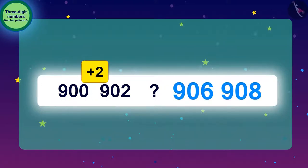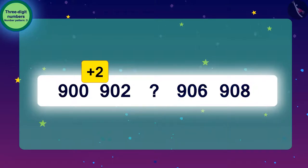And if we look carefully at the last two numbers, we will find that to go from 906 to 908, we have to add 2. In this way, we can find the next number by adding 2 to 902.